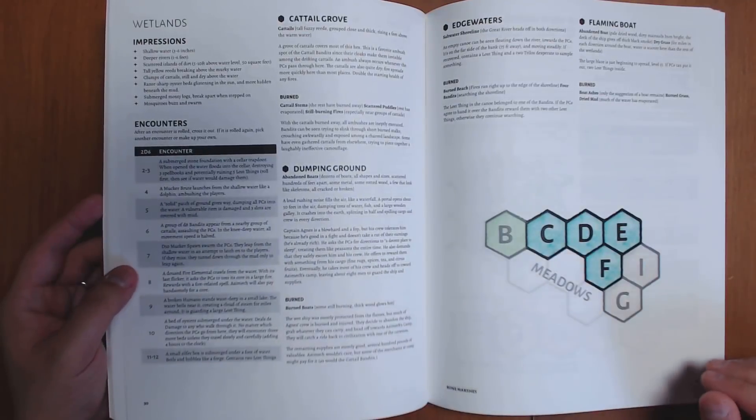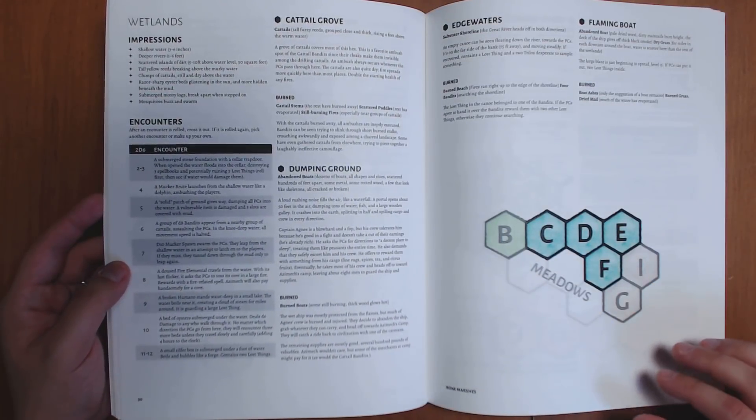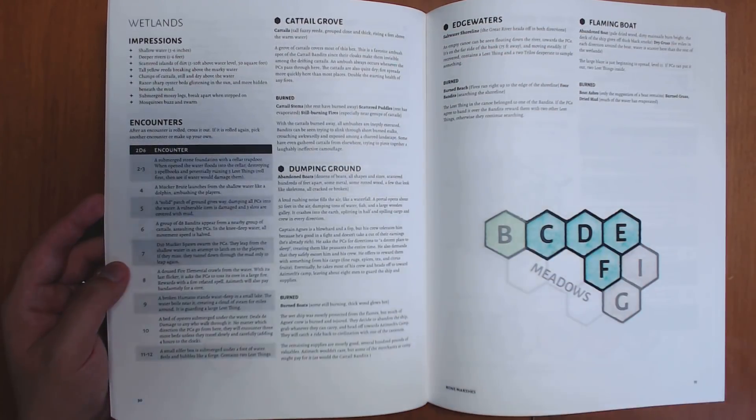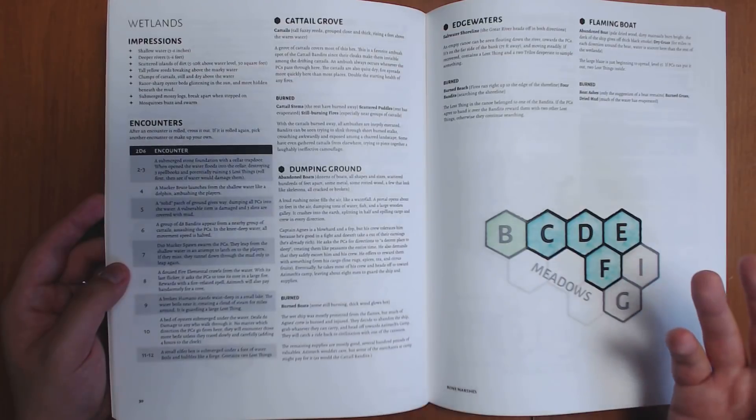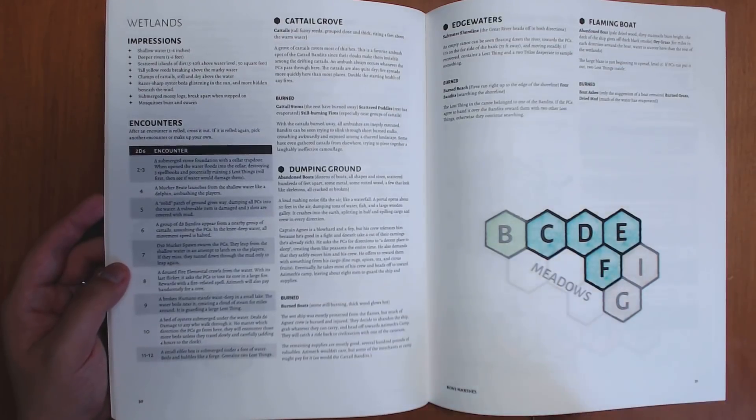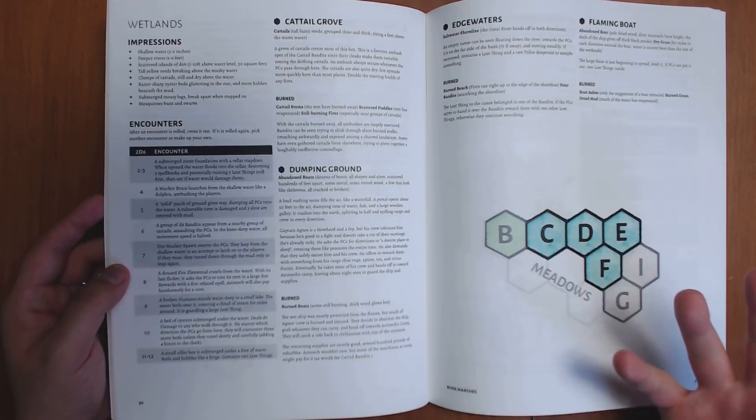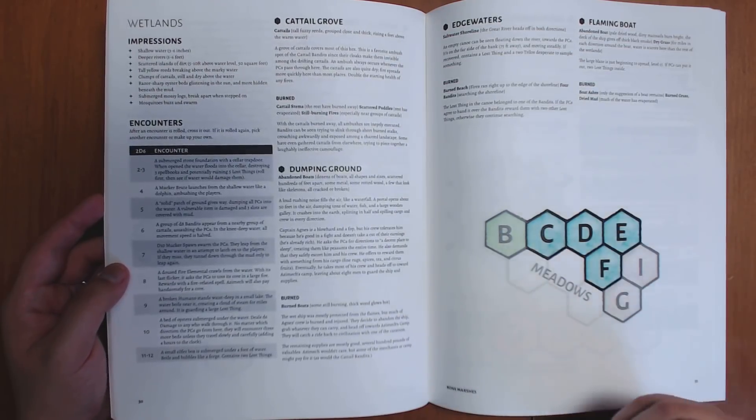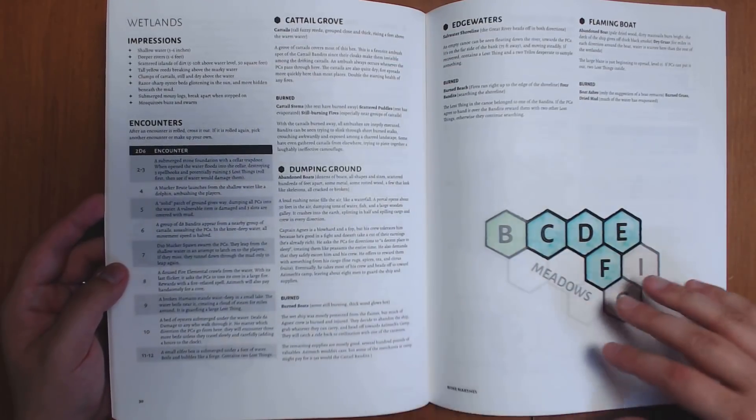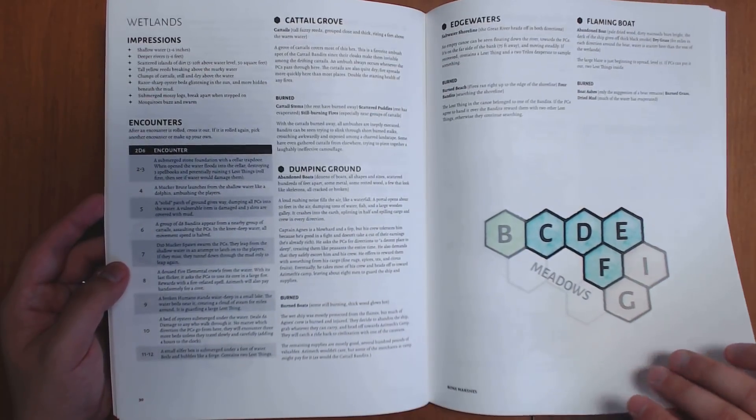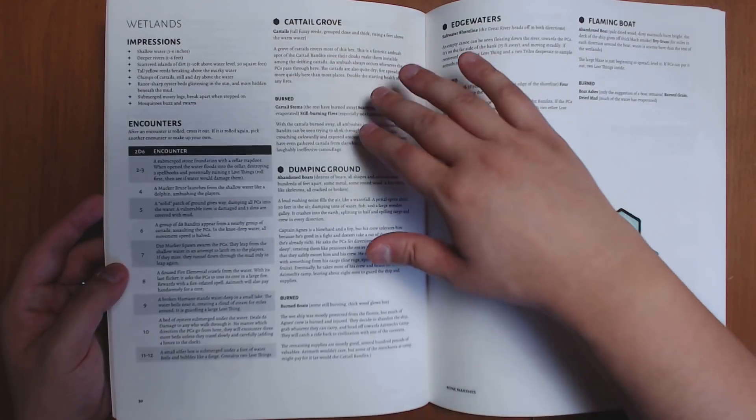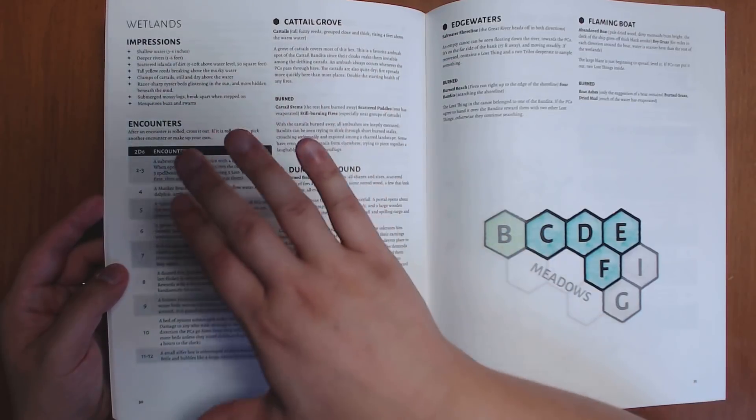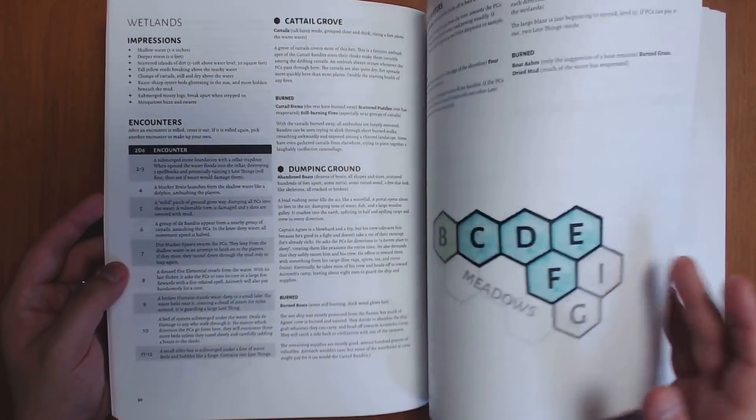Every hex has some unique thing to discover. A lot of them have different features as to what happens when they're burned because there are fire mechanics in here which are really interesting because fires are spreading through these marshes as they're kind of drying out, and you need rules for how big the fire is, how much damage it does, how do you put it out, how long does it take to put it out, and so on. And there's rules for that in the book itself. And so if a section gets totally burned over, then it's going to affect what that hex is like. Each of these different regions has their own encounter table to give it its own flavor.